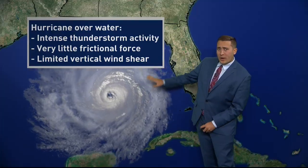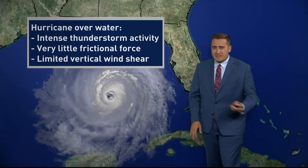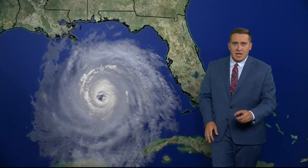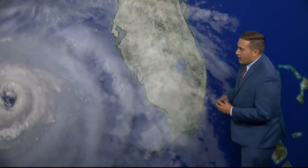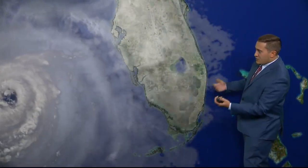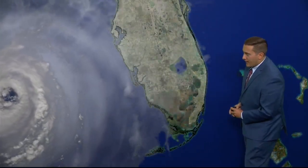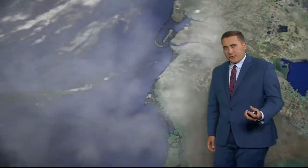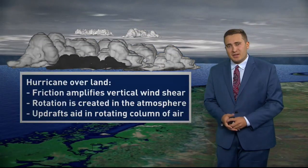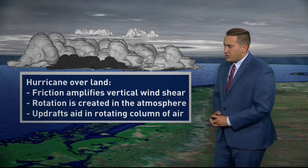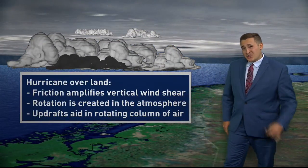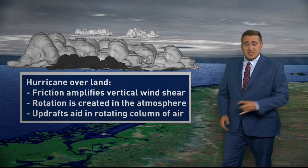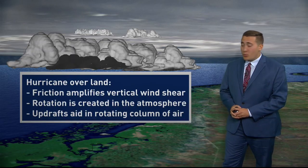Limited vertical wind shear, but that does change as these hurricanes and tropical storms approach land and eventually go over land. What we see is an increase in friction, and friction amplifies that vertical wind shear — that's the change in wind speed and direction with height.